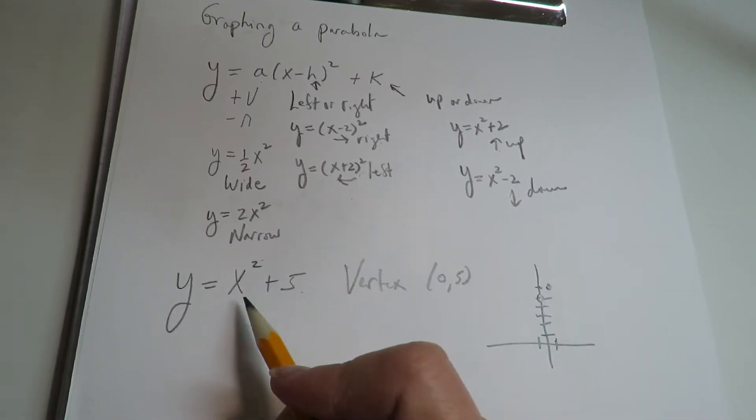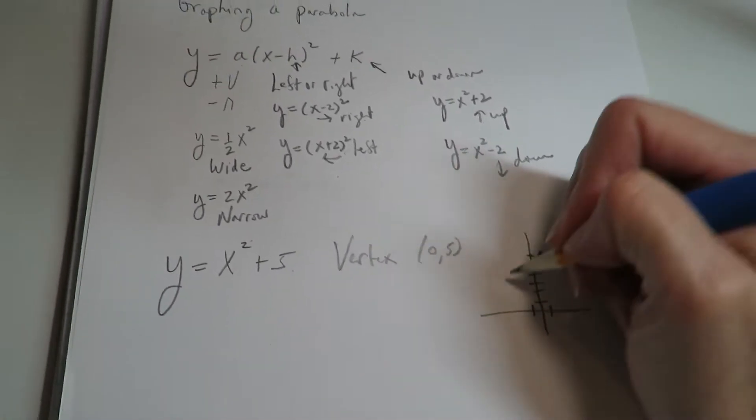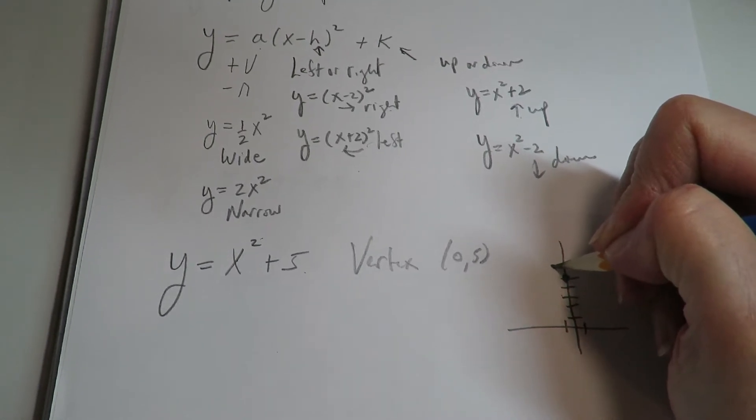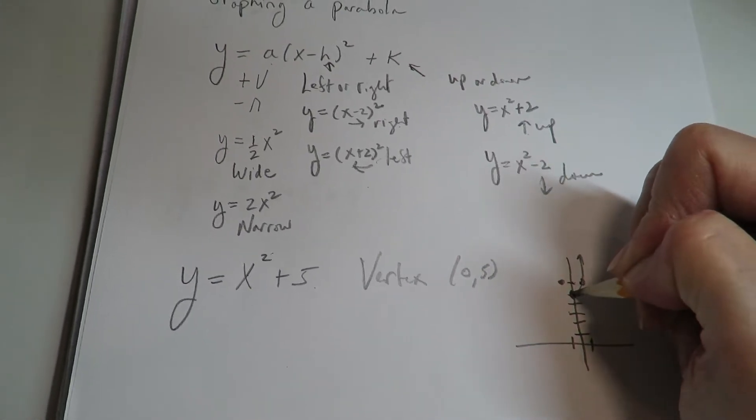If x is negative 1, negative 1 squared plus 5 is also 6. So if I put in something like 1 and negative 1,